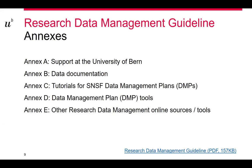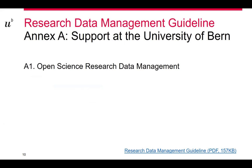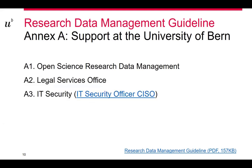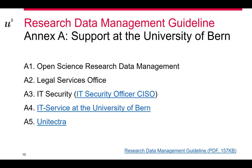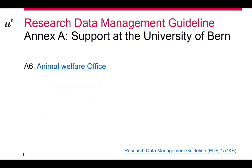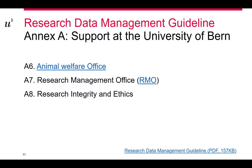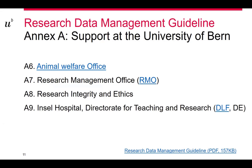For example, if you are looking for specific support existing at the University of Bern, go to Annex A. It breaks down support starting with the Open Science team, then legal aspects, IT security with a link to the CISO (Chief Information Security Officer), IT services specifics, UNITECTRA, the animal welfare office, the research management office, research integrity and ethics, and specifics about the Insel Hospital — including a specific list of contacts such as the clinical trial unit.